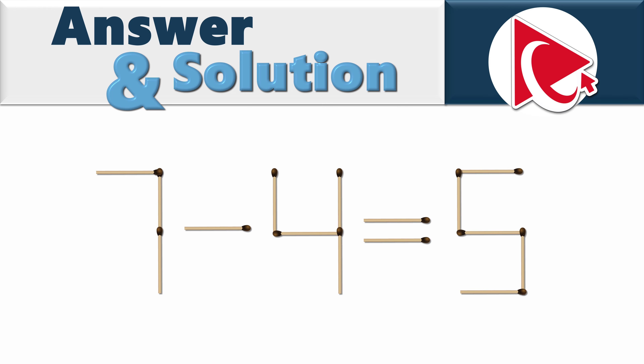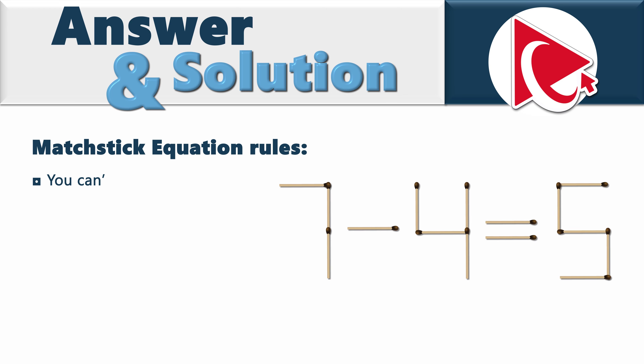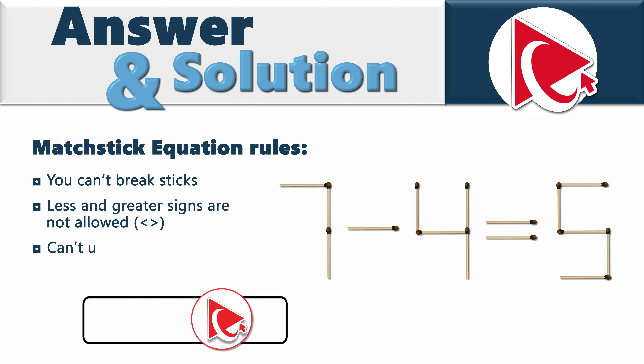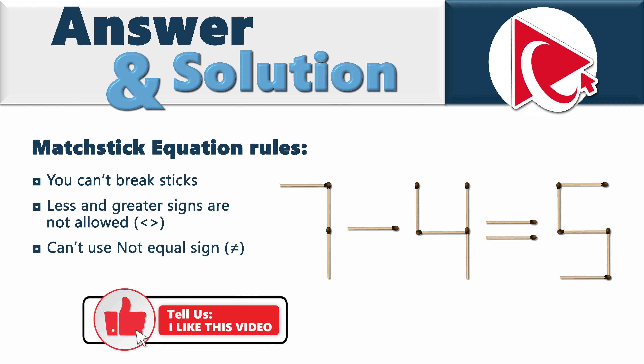To solve this challenge, let's first look at the rules of what you cannot do. Number one: you can't break the sticks. Number two: less and greater signs are not allowed. And last but not least, you cannot use the not-equal sign. For example, you can move one stick and come up with 1 minus 4 not equal to 5, but this is not allowed.